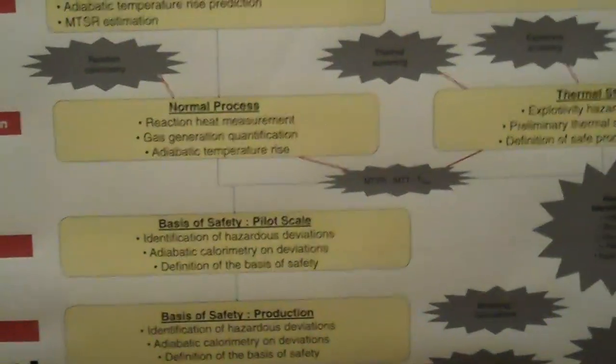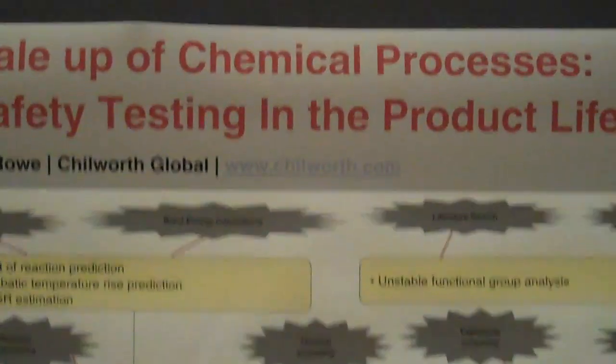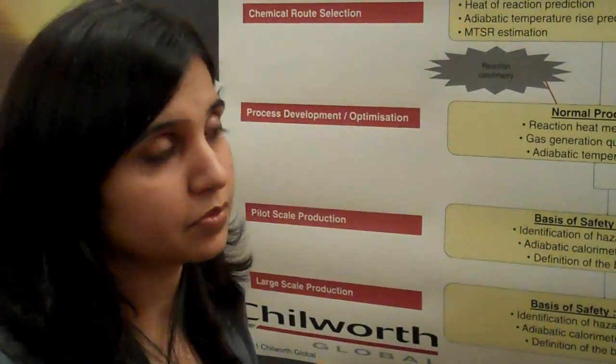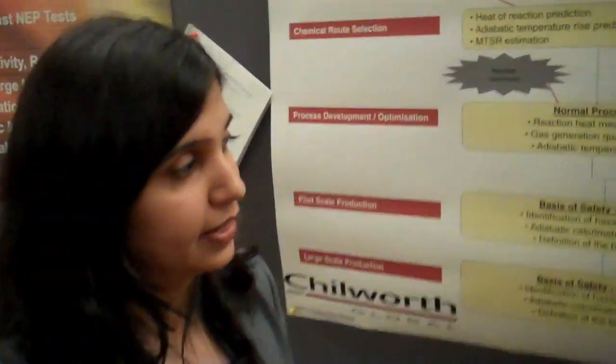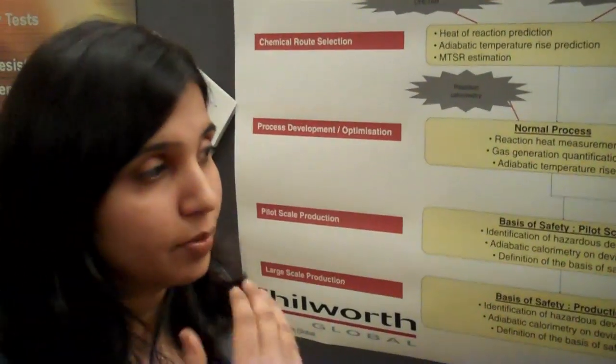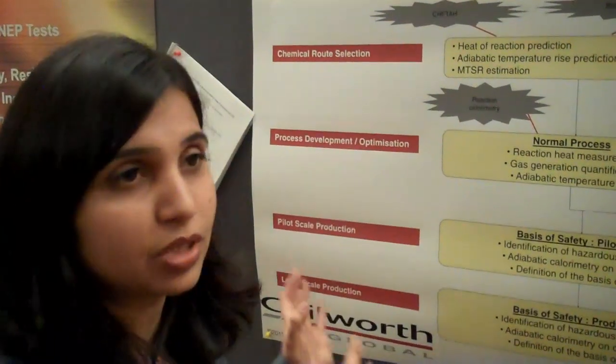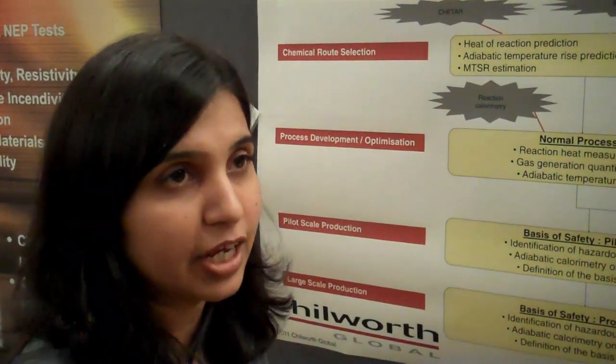Does your method include helping customers conduct designed experiments on the front end in the R&D laboratory with respect to the compound they're trying to make — various routes and conditions — to make sure they pick an optimal condition of yield versus safety? Absolutely. The way we work is to get a process description, prepare a strategy to assess the process, and once our clients agree on the testing strategy, we look at the properties of the final product, the different intermediates, and the starting material. Based on the stability of each of those components, we help them design their process to avoid hazardous situations.